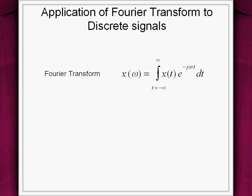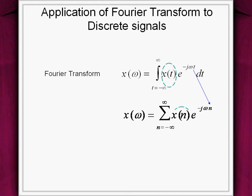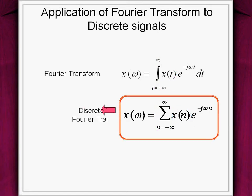Now let's apply Fourier transform for understanding the frequency content of periodic discrete time signals. The Fourier transform equation needs to be modified: first, replace t by n, then x(t) by x[n], and change the integration by a summation operation. This category of Fourier transform is called the Discrete Time Fourier Transform, or DTFT.